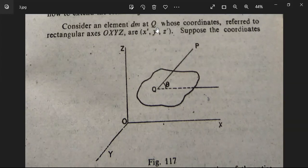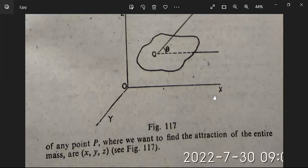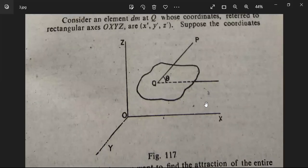Point Q has coordinates x', y', z'. Point P is another point with coordinates x, y, z, and PQ makes an angle theta with the x-axis. We want to find the attraction of the entire mass at any point P with coordinates x, y, z.